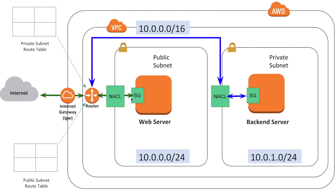We allowed inbound traffic to the database server from the web server security group so the web server can talk to the database server. We tested this by SSH-ing into the web server and launching a ping request to the database server and verifying we got a response. When launching these two instances, we used the same private key — the youtube.pem file — which we downloaded to our local machine, and from that directory we could SSH into the web server over the internet.